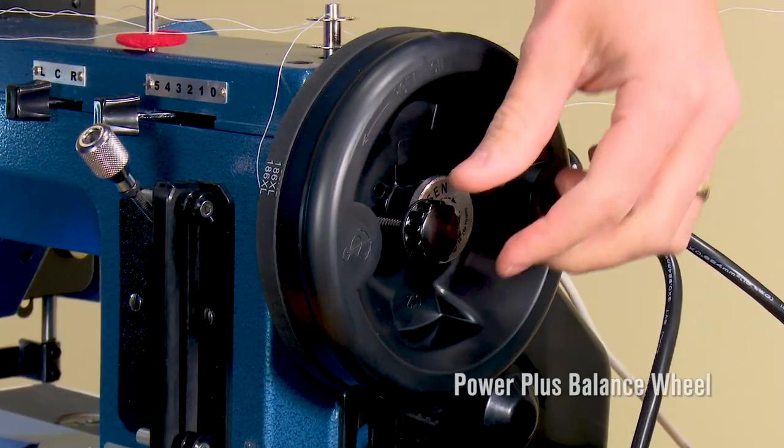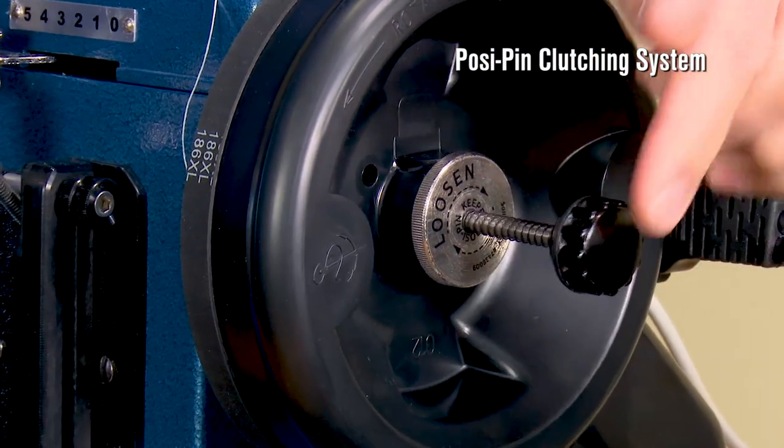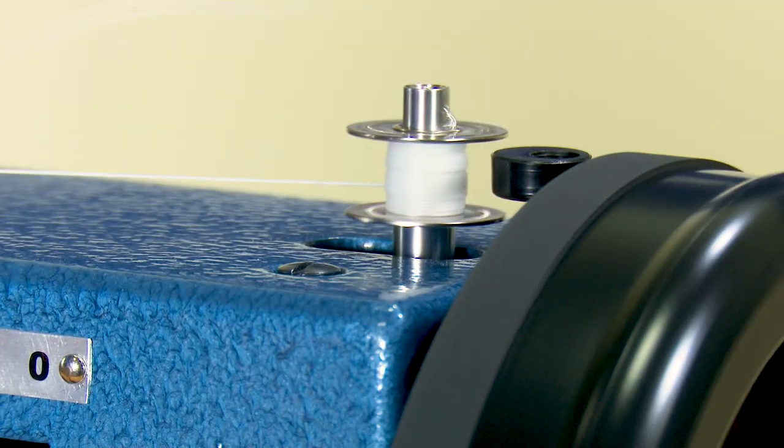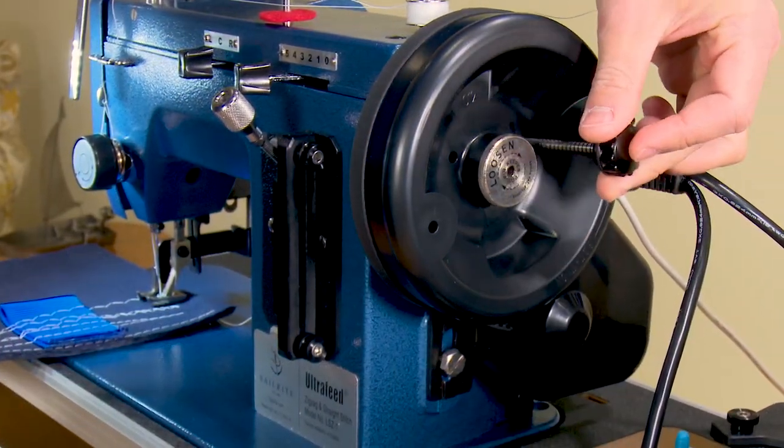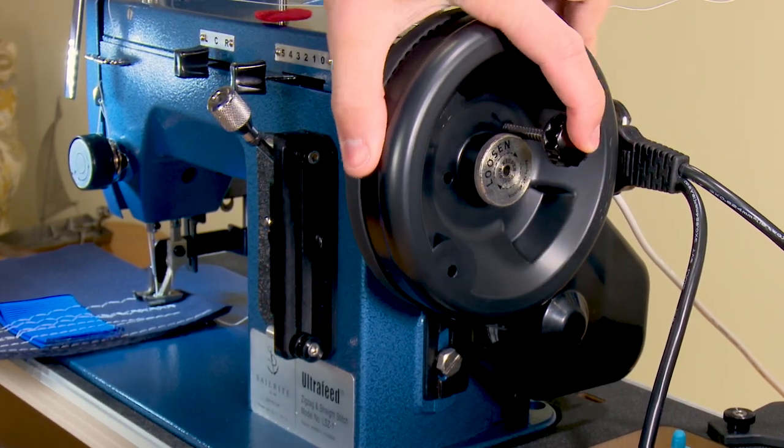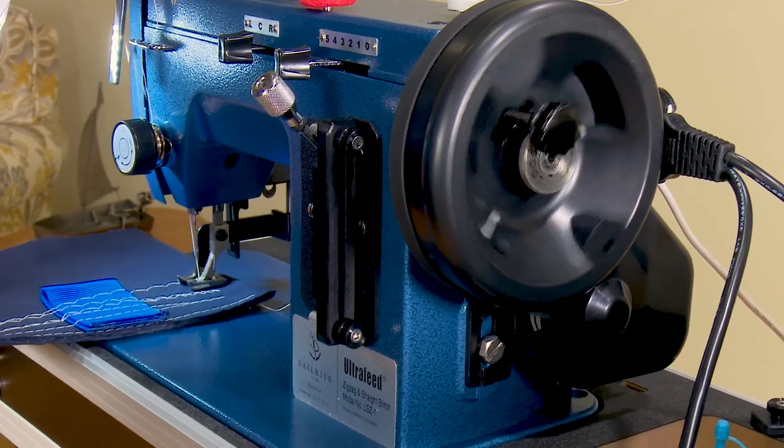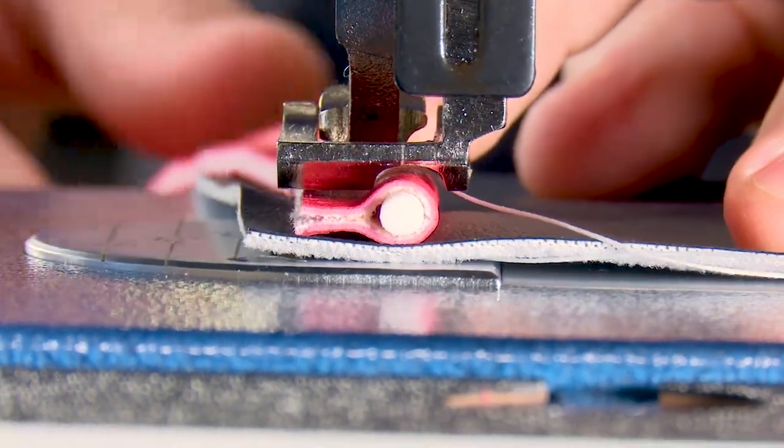The LSZ1 Plus Package includes Sailrite's Power Plus Wheel and our patented posi pin clutching system. Pull the posi pin and it disengages the needle drive so you can wind bobbins without the needle moving up and down. Done winding bobbins? Simply reinsert the posi pin and you're ready to sew again. The posi pin provides 100% power transfer from the balance wheel to the needle.